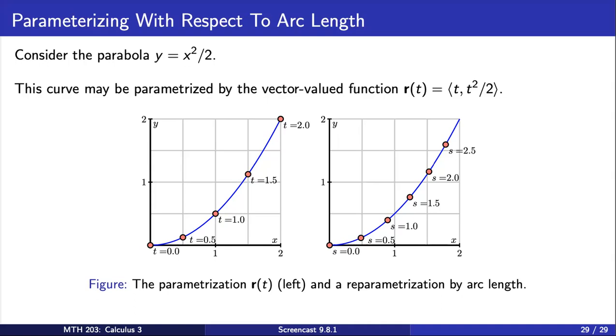To see the benefits of such a parameterization, consider an interstate highway. One way to parameterize the curve defined by the highway is to drive along the highway and record our position at every time, thus creating a function. If we encounter an accident or road construction, this parameterization might not be relevant to another person driving along the same highway.